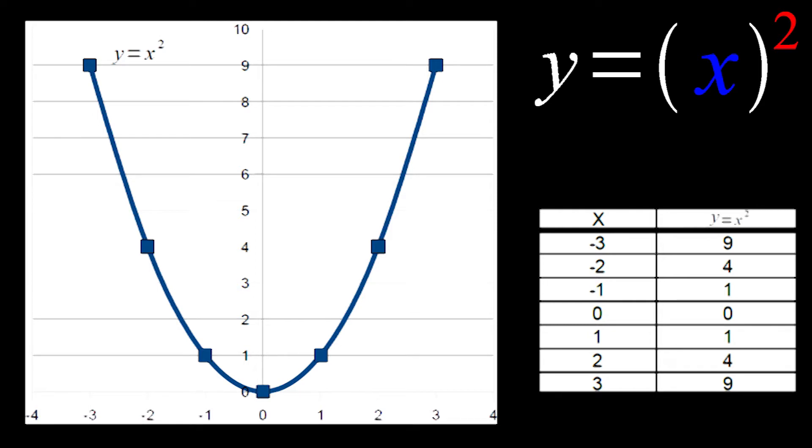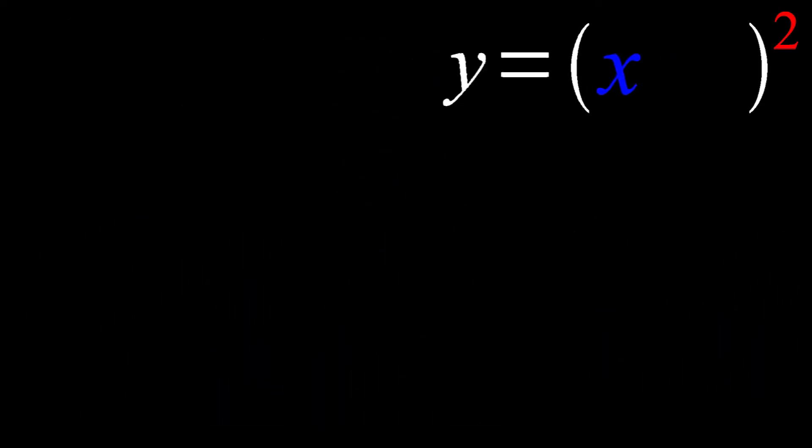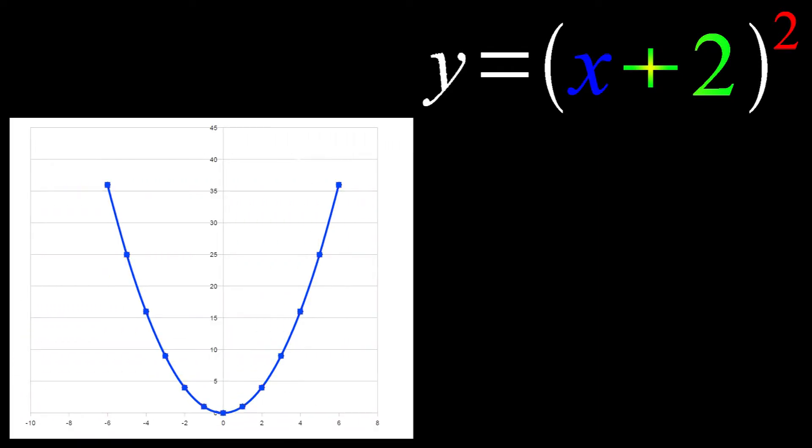let's bring that plus 2 back in the parentheses. Any term inside the parentheses, where that power of 2 has an effect on, is going to be a horizontal shift, or a shift left or right. And it's a little different from what you might expect, meaning that a plus 2 is actually going to be a shift of 2 units to the left. Whereas a negative 2 would have been a shift of 2 units to the right.